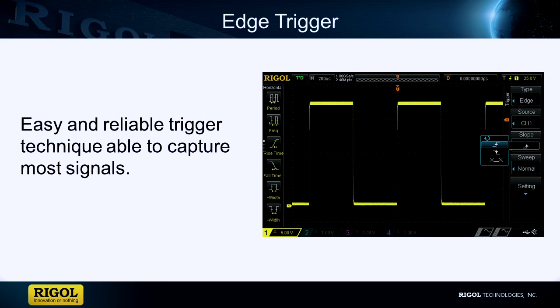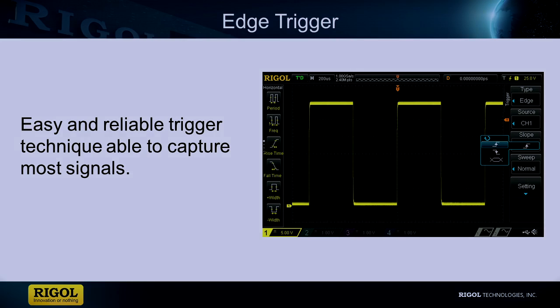One of our more basic triggering techniques is edge triggering. Edge triggering is an easy and reliable technique to capture most signals. It allows the user to set a threshold which the signal must cross for an instance to occur.